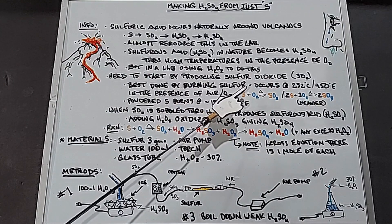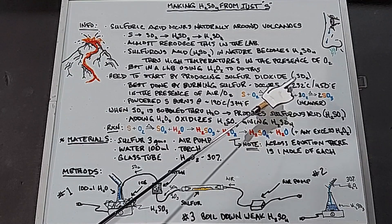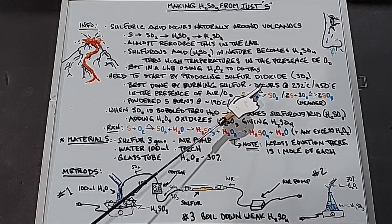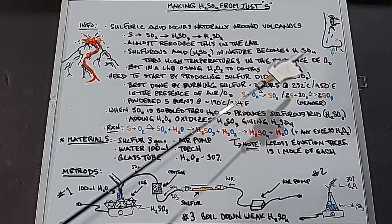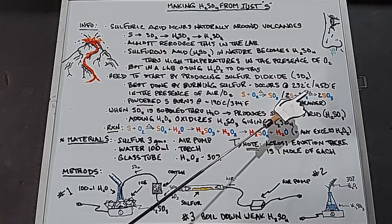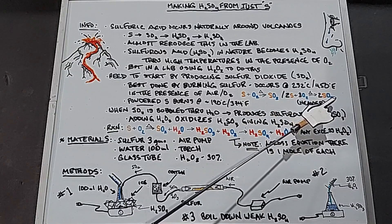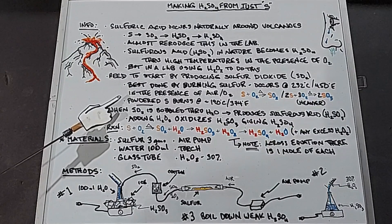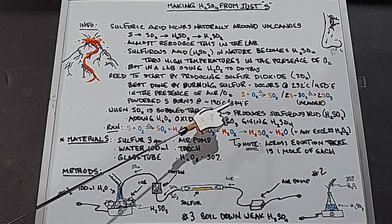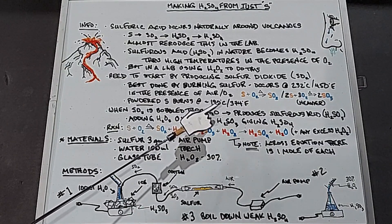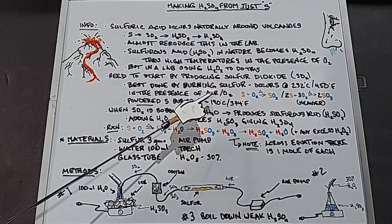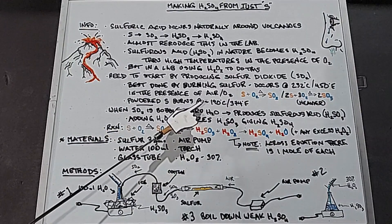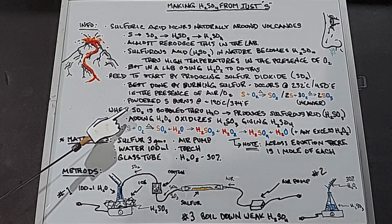First we need to produce sulfur dioxide, best done by burning sulfur in the presence of air at 232°C (450°F). With sulfur, oxygen, and heat we get sulfur dioxide, but we also get sulfur trioxide (two sulfurs and three oxygens giving us two sulfur trioxides). Sulfur trioxide is heavier, which will come into play later as we can try to filter it out. Interestingly, powdered sulfur burns at a lower temperature of around 190°C.